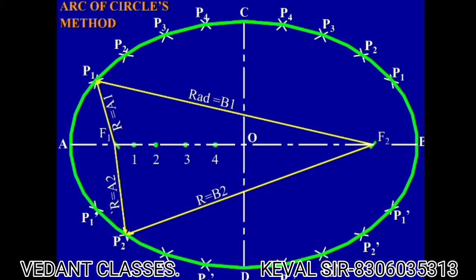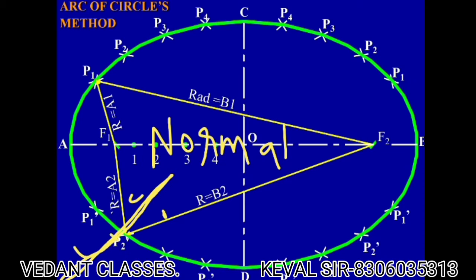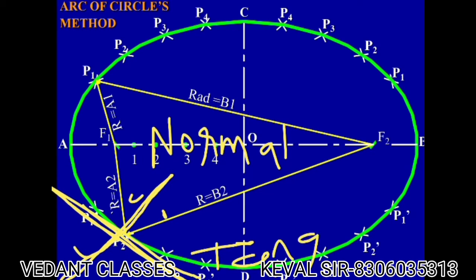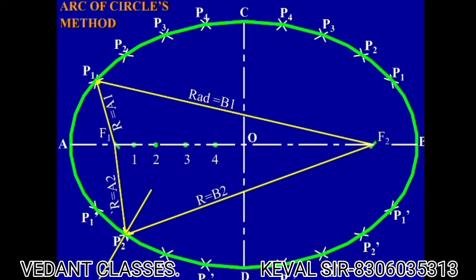Now if you want to make a tangent to the ellipse at any point — let's say P2 — just draw a bisector like this; this will be your normal line. From the normal line, draw a tangent at 90 degrees. This is how you can draw a tangent and normal to a given point on the ellipse.